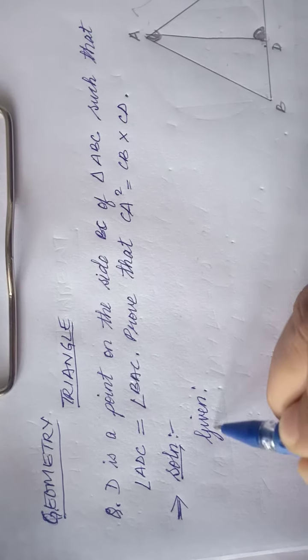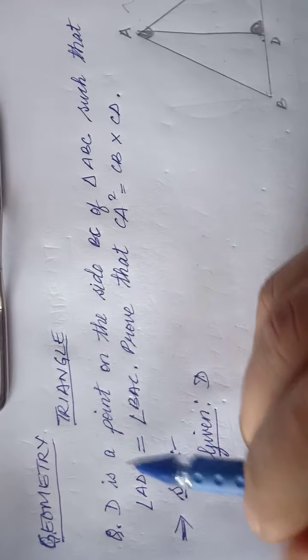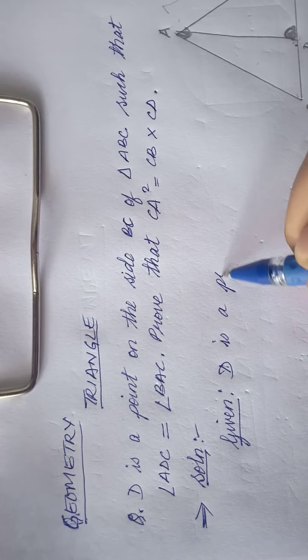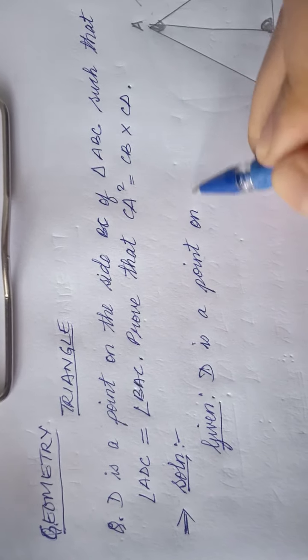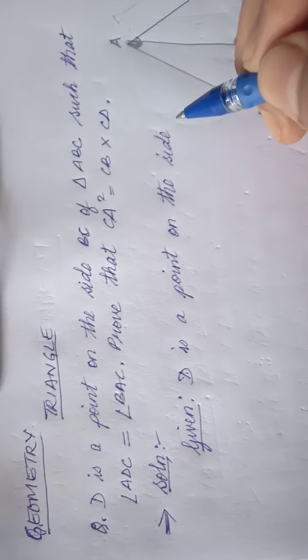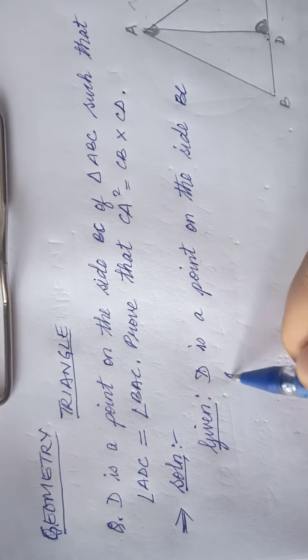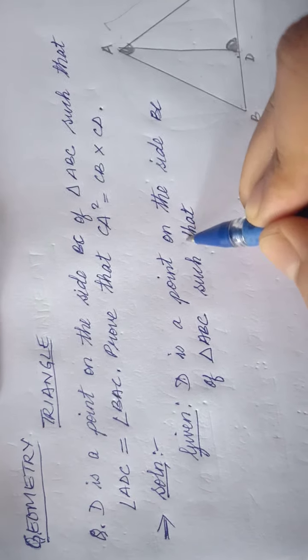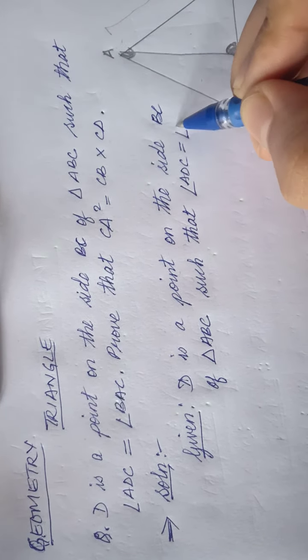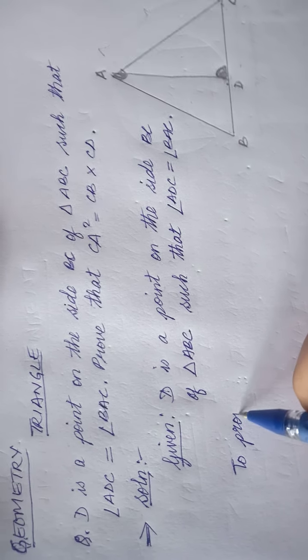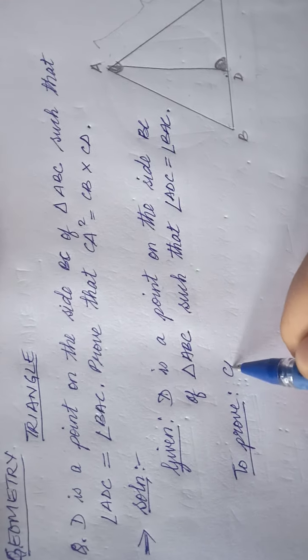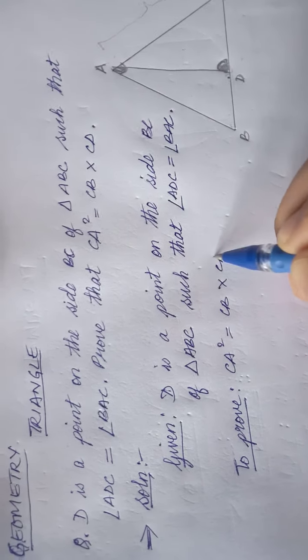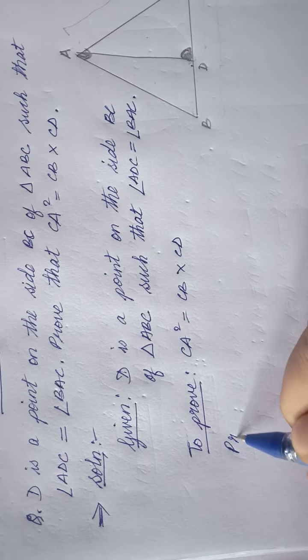First of all we write the given. Given: D is a point on the side BC of triangle ABC such that angle ADC is equal to angle BAC. To prove: CA² is equal to CB into CD.